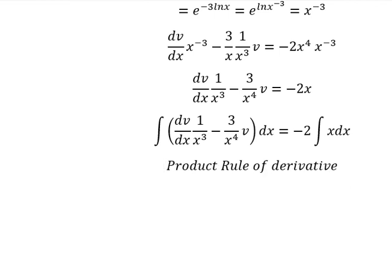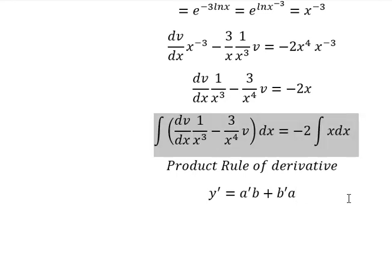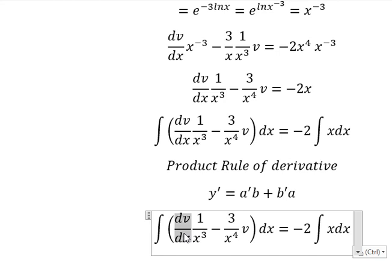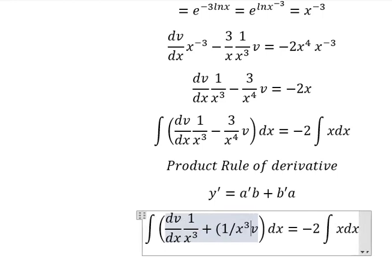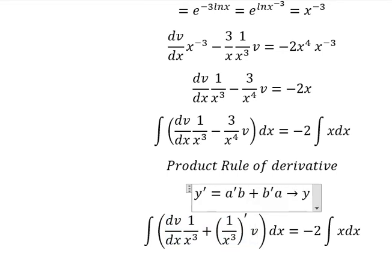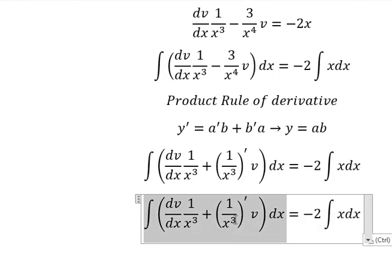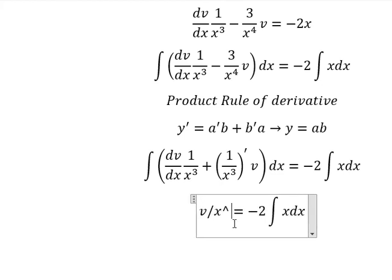Next, we can use the product rule of the derivative. The derivative of a times b equals the derivative of a multiplied by b, plus the derivative of b multiplied by a. So the integration of that gives us v times a times b. The integration gives us v over x to the power of 3.